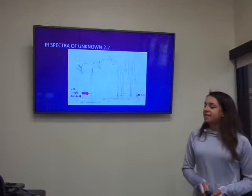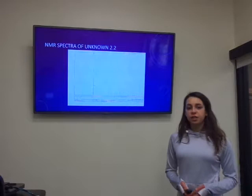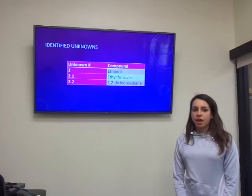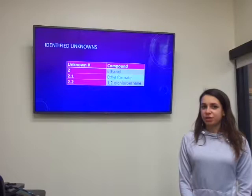For unknown 2.2 we found a CH singly bonded and a CCl functional group and there was only one type of hydrogen so there was no ratio, and from there we were able to determine that 1,2-dichloroethane was present. To sum up, the three unknown compounds that we found were ethanol, ethyl formate, and 1,2-dichloroethane.